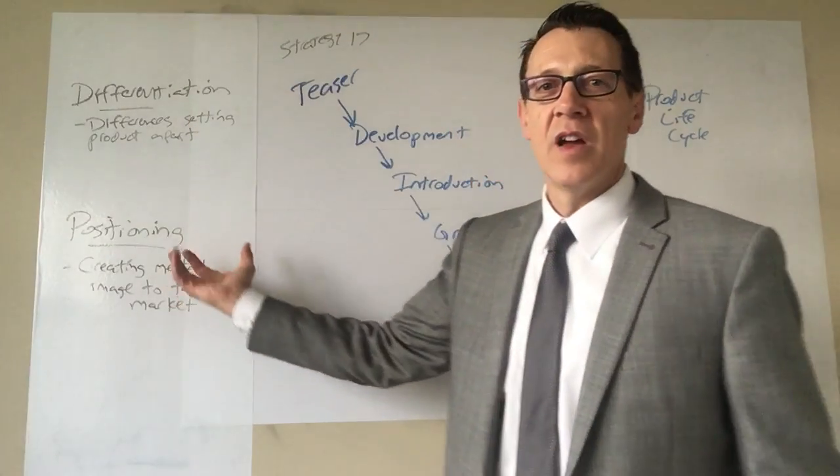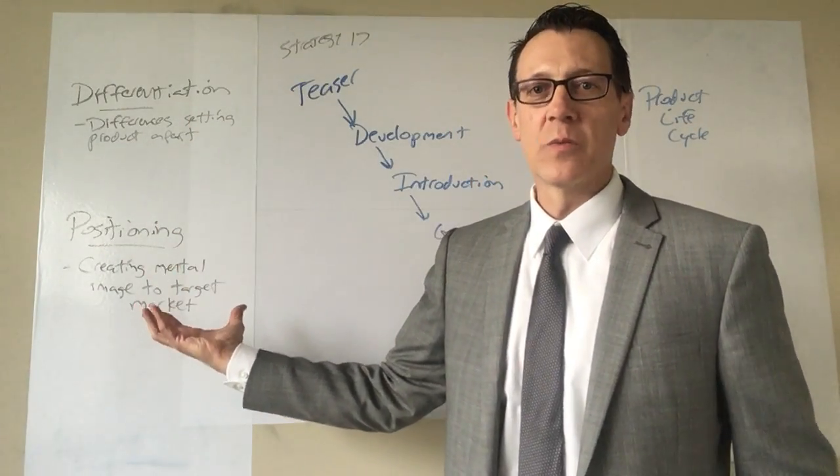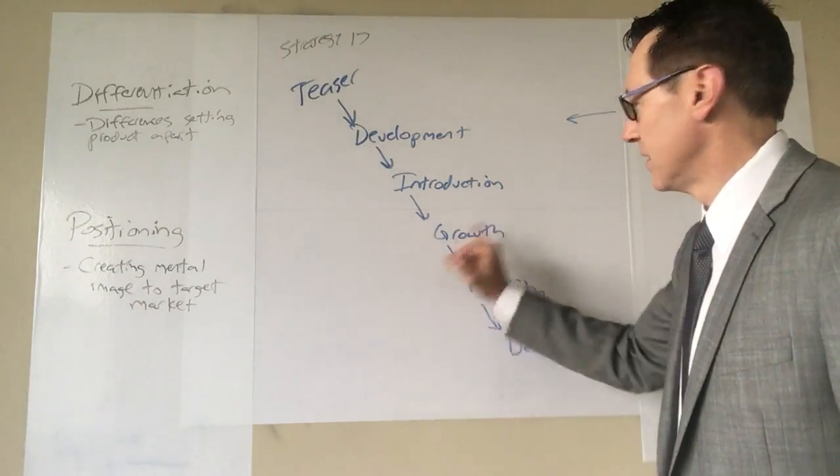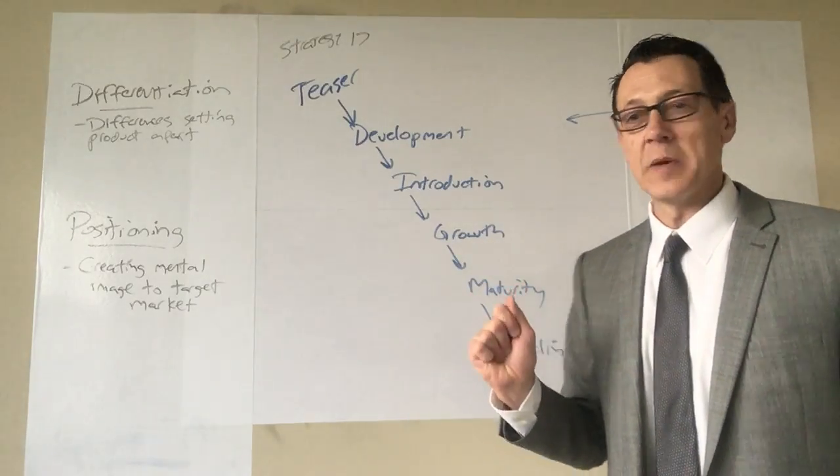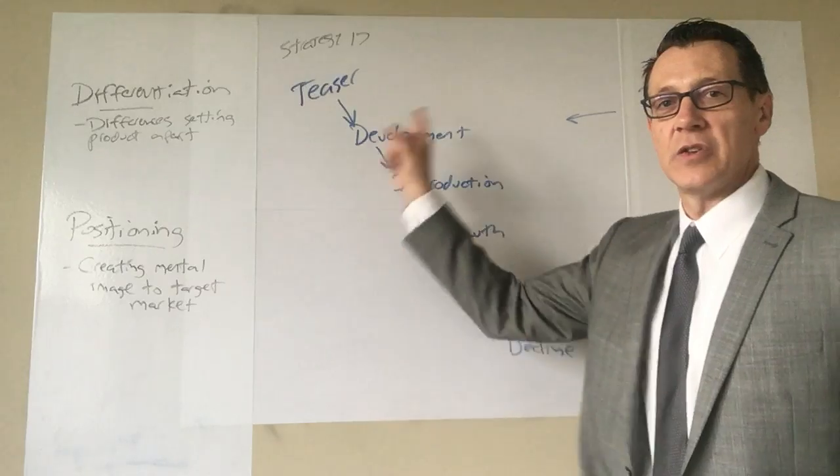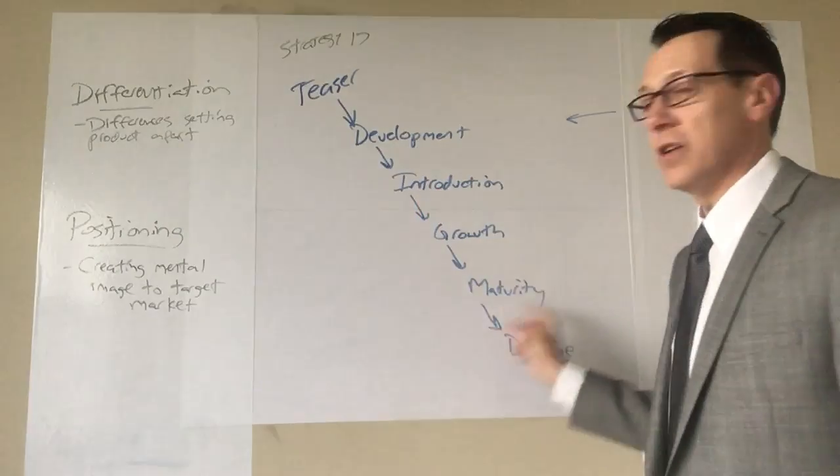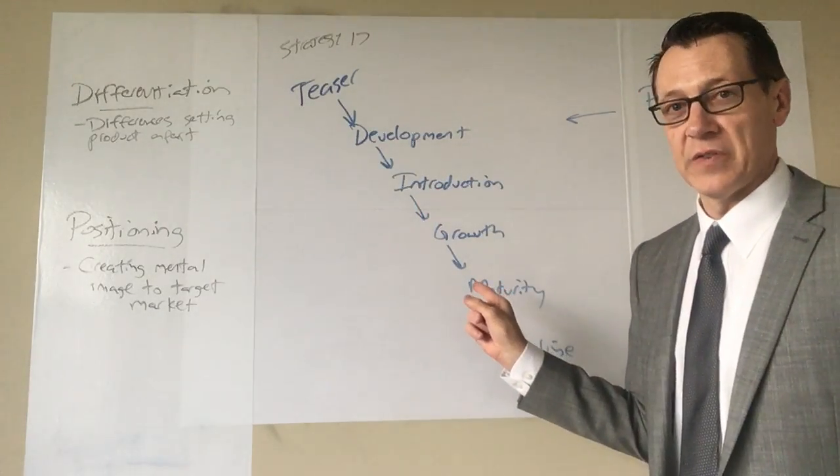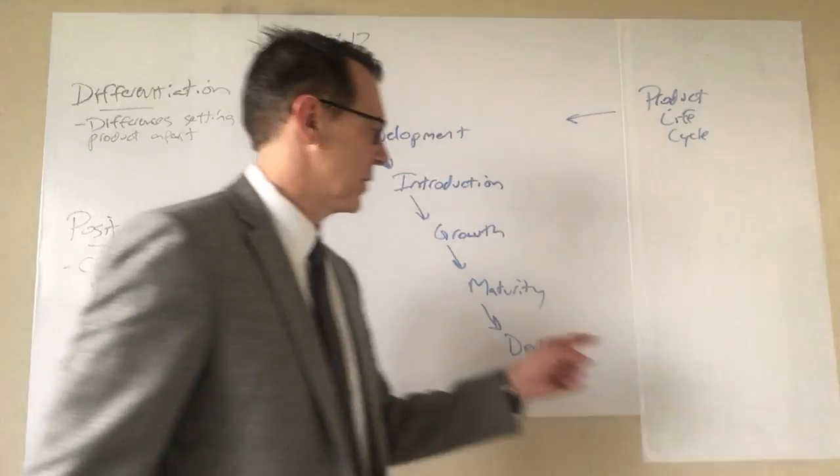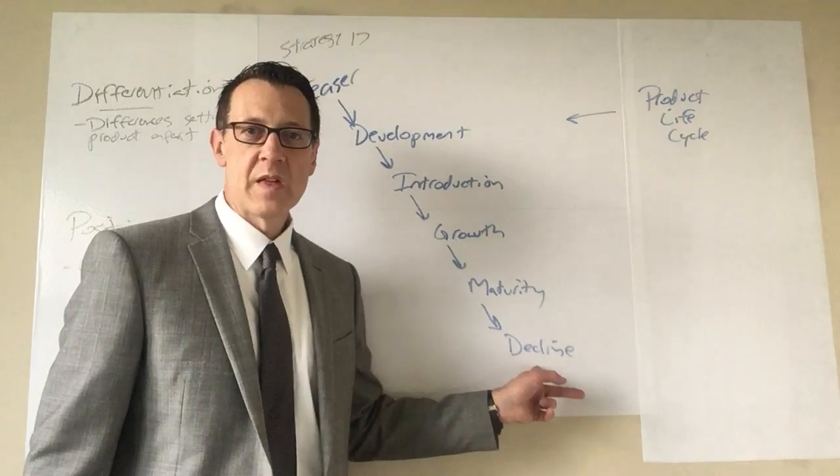This is why you do differentiation and positioning, is because at some point in this maturity stage you're going to have to tell people why they should choose your product over somebody else. Here they just needed to choose your product and try it. Here you need now compete versus somebody, because at some point somebody's going to drop out of this marketplace and that's right here. You just want to be the last one to decline.